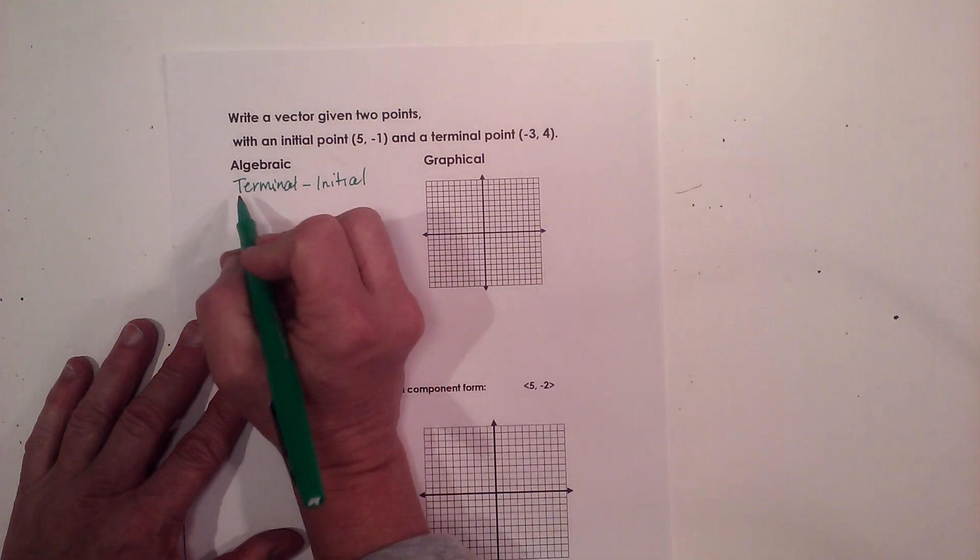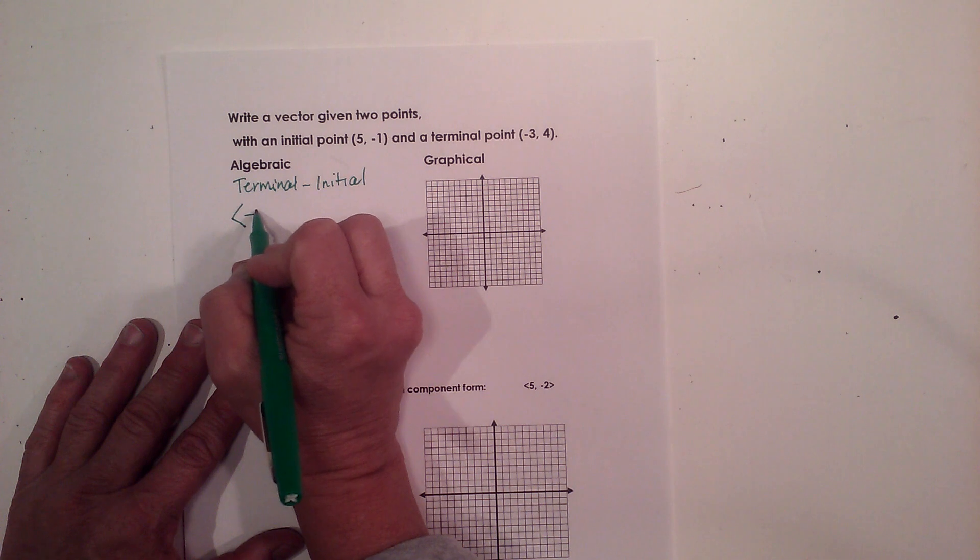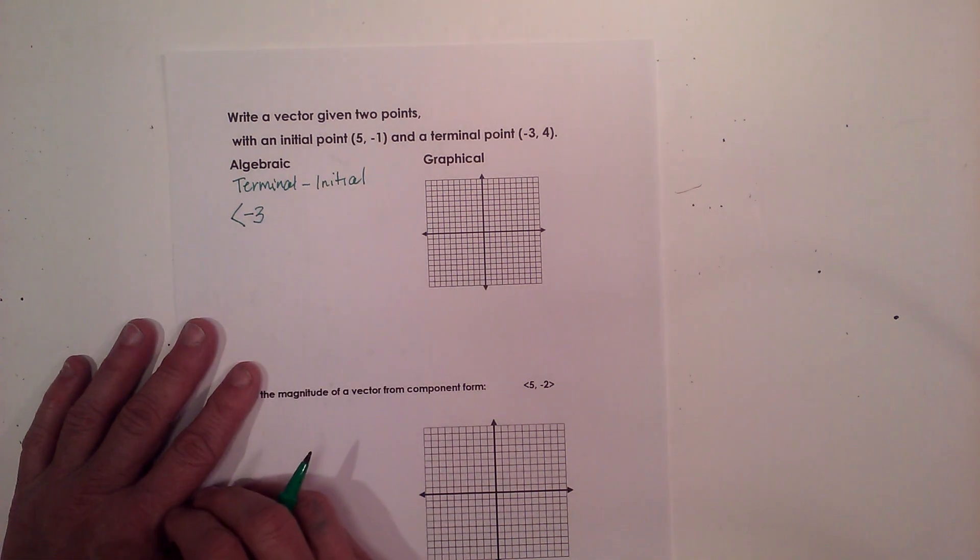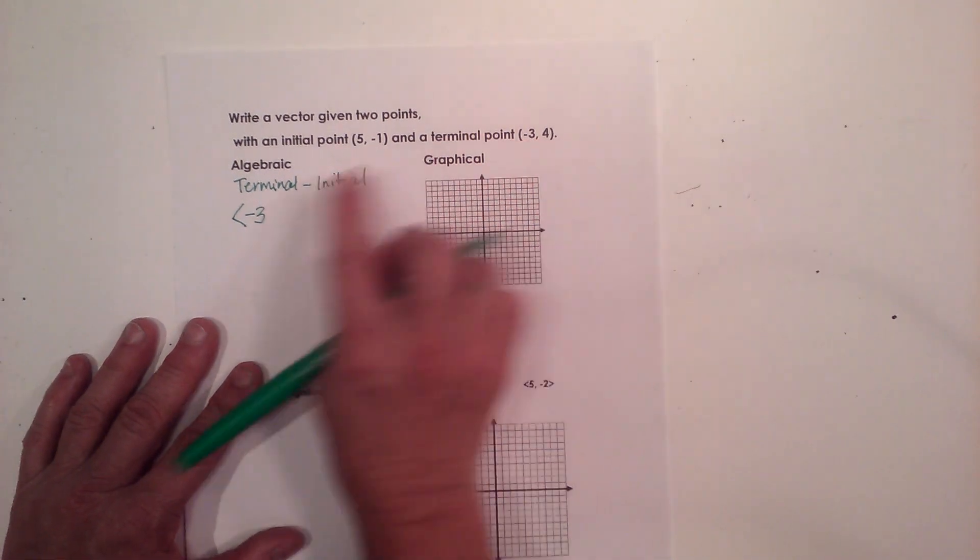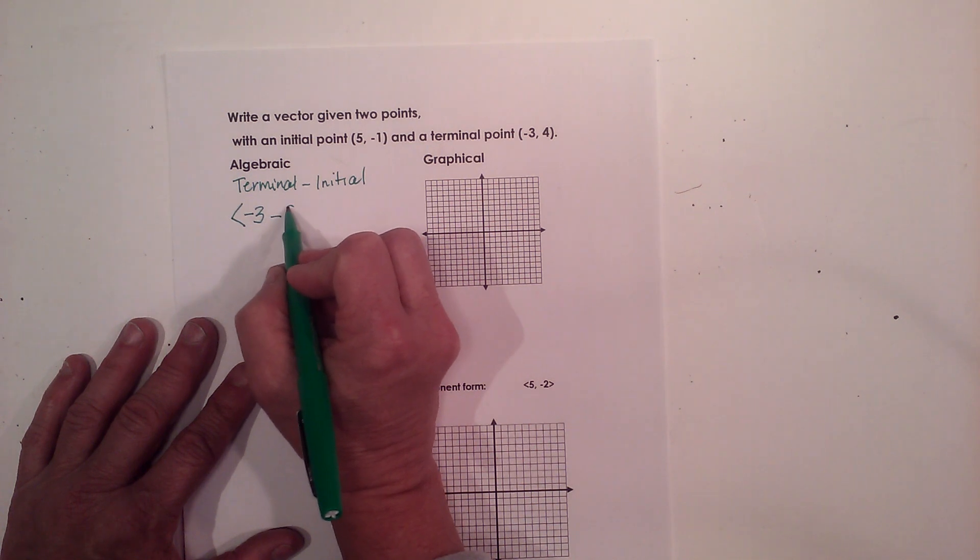So the first thing I'm going to do is take my terminal point, the first coordinate, which is -3, that's the terminal, and I'm going to subtract from it 5.